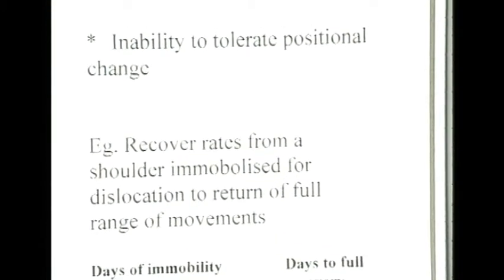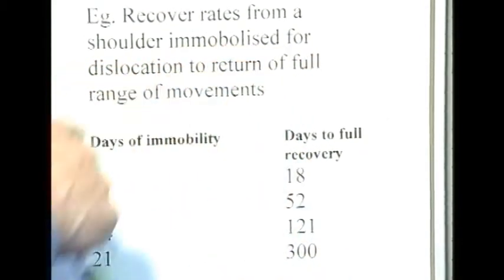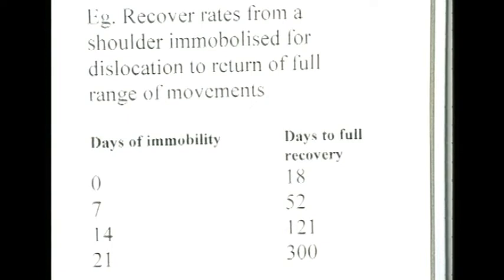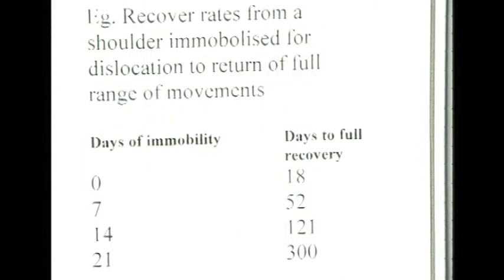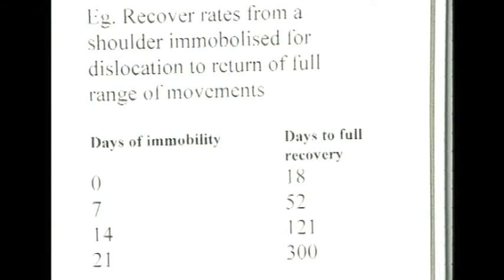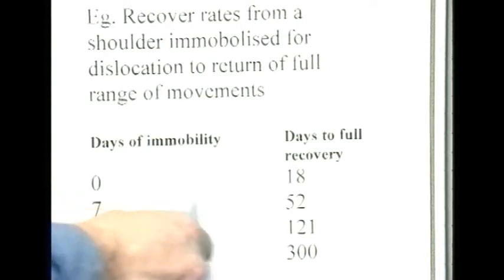Recovery rates from immobilization are often quite long — it takes patients a long time to get back to fitness. Take the example of recovery rates from a shoulder immobilized because of dislocation. If the shoulder is immobilized for no days at all, days to full recovery is about 18. This actually shows that it is the immobility that's the problem rather than the initial disease, because when it's not immobilized it recovers fairly quickly — and those 18 days can be accounted for by the trauma itself.